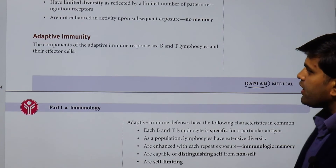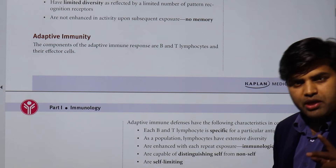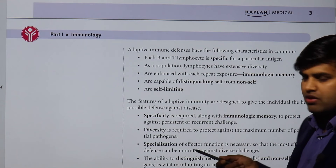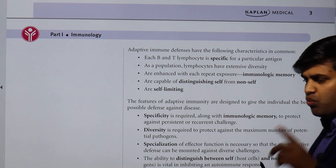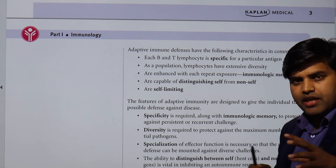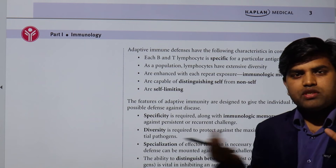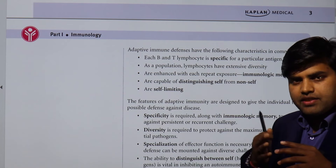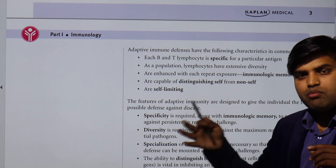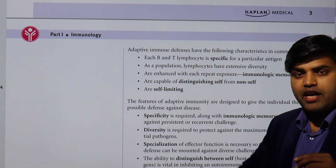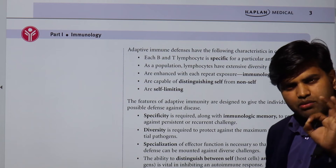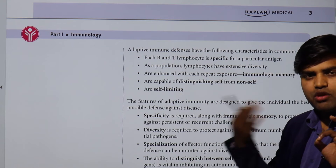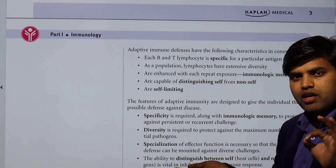Moving forward to adaptive immunity, it is composed of B and T cells. The adaptive immunity has the following characteristics: T and B cells are specific for particular antigens. A virus or bacterium has thousands of antigenic epitopes or antigenic determinants. A single part of a virus can induce the adaptive immunity cycle and produce antibody. Even a small part like the capsule of a bacterium will activate T lymphocytes, which then activate B lymphocytes, plasma cells form, and antibody is released.